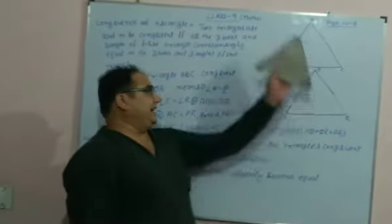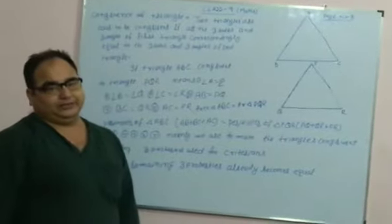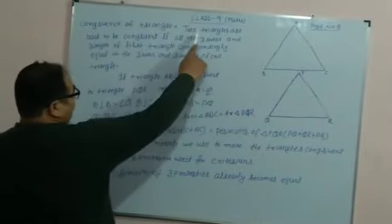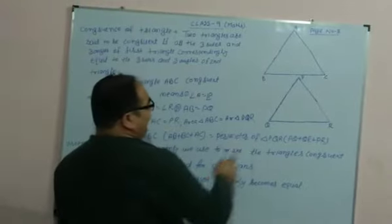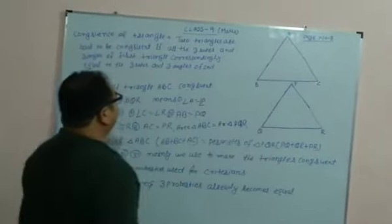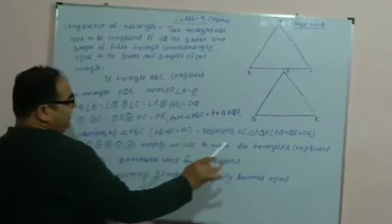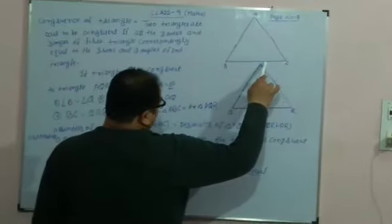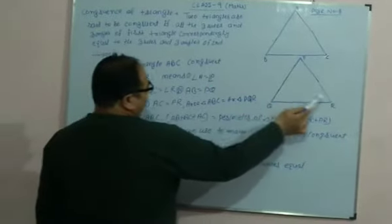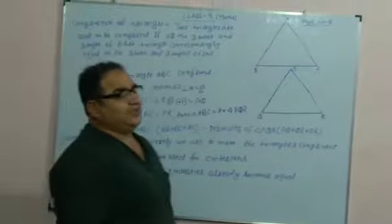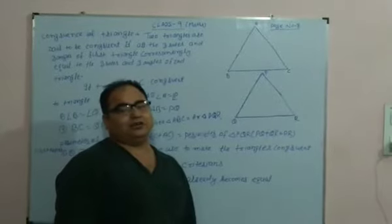As for example, we have two figures: triangle ABC and triangle PQR. How are they congruent? All three sides — AB, BC, AC — and three angles — angle A, angle B, angle C — are correspondingly equal to the second figure: PQ, QR, PR, and angle P, angle Q, angle R. When these properties are equal, then we say these two triangles are congruent.